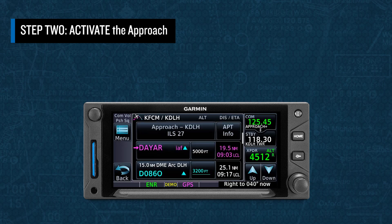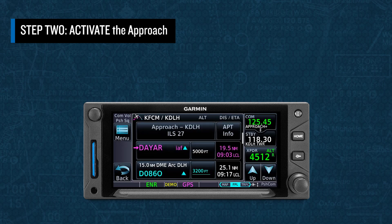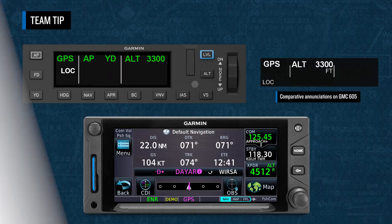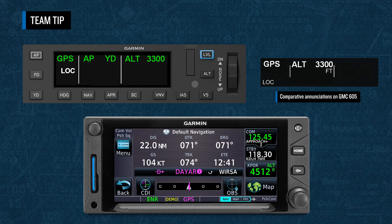You can verify that the approach is active by observing the active waypoint below the approach header in the flight plan. Step three is to arm the approach. The trigger for this is when ATC clears you for the approach. Arming the approach provides for capturing the lateral guidance as well as any vertical guidance associated with the approach. A tip here is that if you're only cleared to intercept the inbound course, you should select the NAV button rather than the APR button, because a clearance to intercept the course is not a clearance to descend on the approach.